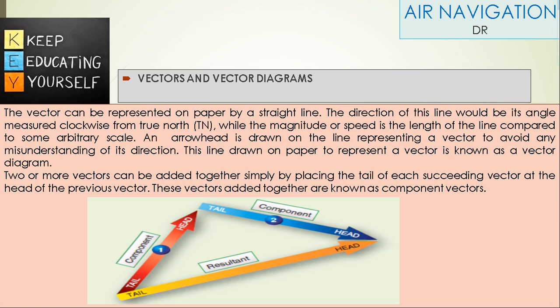This line drawn on paper to represent a vector is known as a vector diagram. Two or more vectors can be added together simply by placing the tail of each succeeding vector at the head of the previous vector. These vectors added together are known as component vectors.